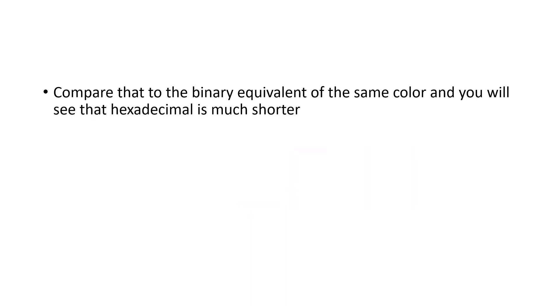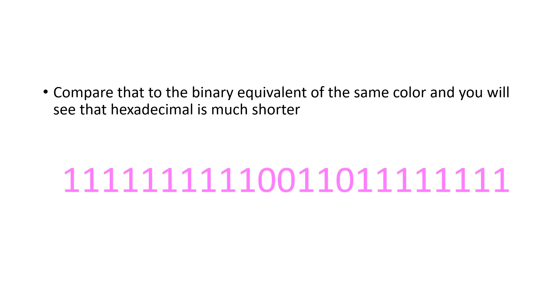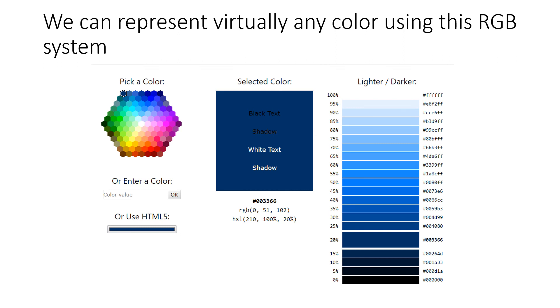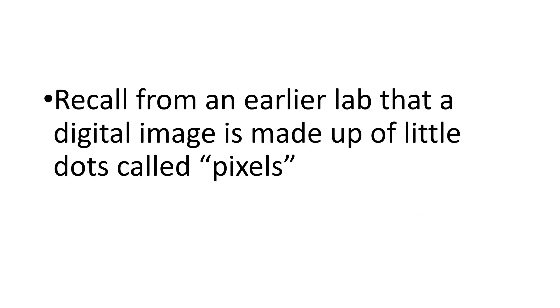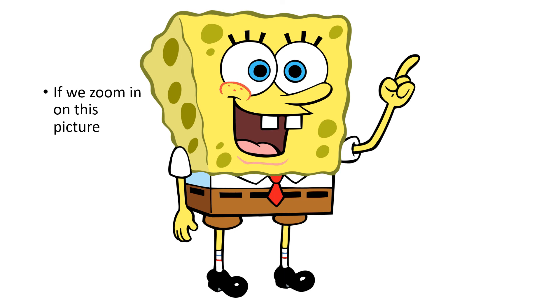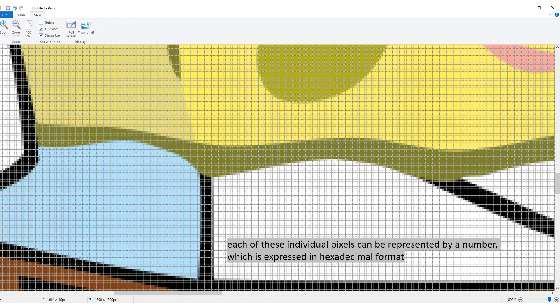So the color pink is represented in hexadecimal as FF66FF. If you compare that to the binary equivalent of the same color, you will see that hexadecimal is really much shorter and much less of a pain to program. And again, using this system we could represent virtually any color. Recall from an earlier lab that a digital image is made up of little dots called pixels, and if we zoom in on a picture we can see the individual pixels — each of which can be represented by a hexadecimal number.